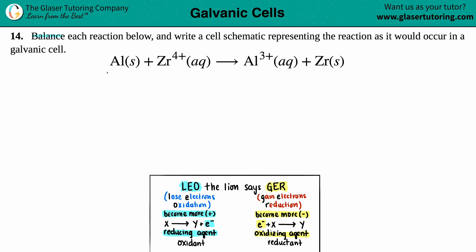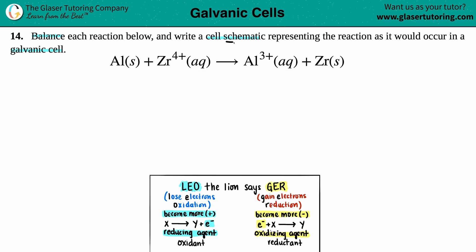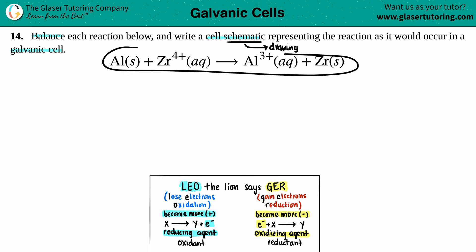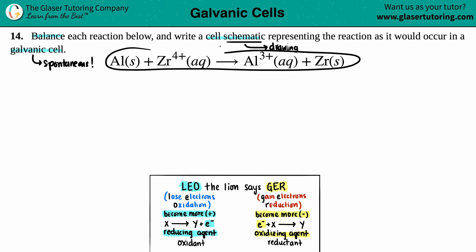Problem 14 asks us to balance each reaction and write a cell schematic representing the reaction as it would occur in a galvanic cell. So we need to take this equation, balance it, and write a cell schematic. A schematic is basically a chemical drawing that represents the equation using brackets. Since we're in a galvanic cell, this is a spontaneous reaction that doesn't need additional energy. To start, we should break the equation into its half-reactions.